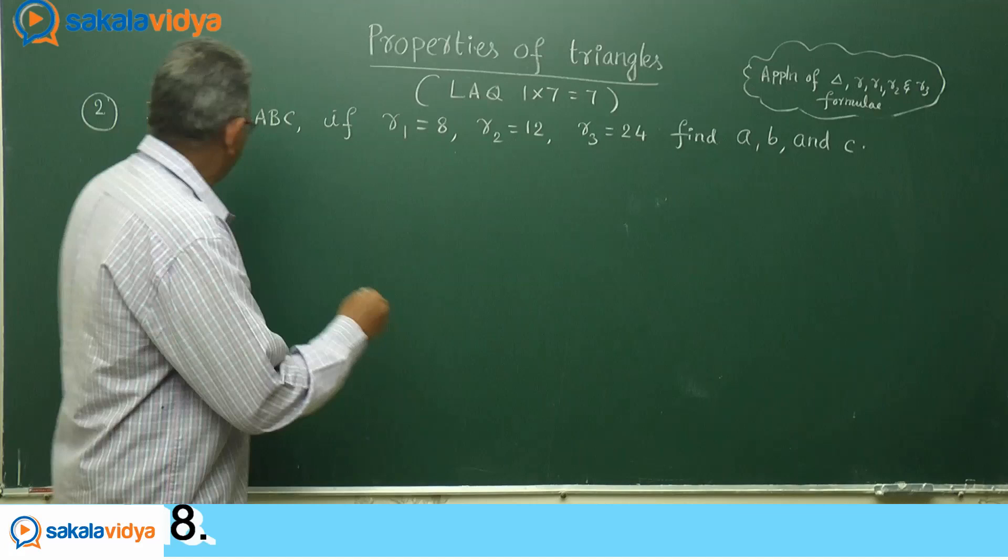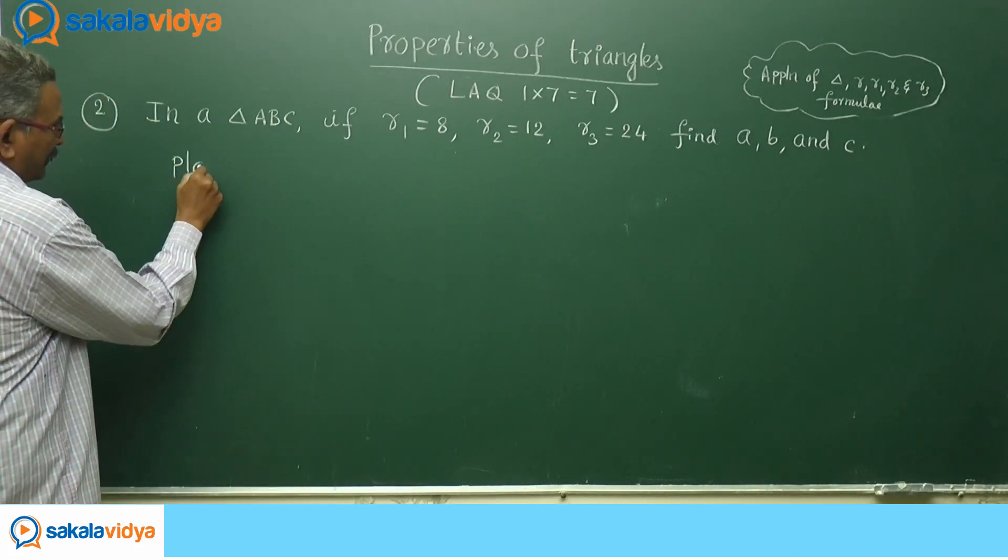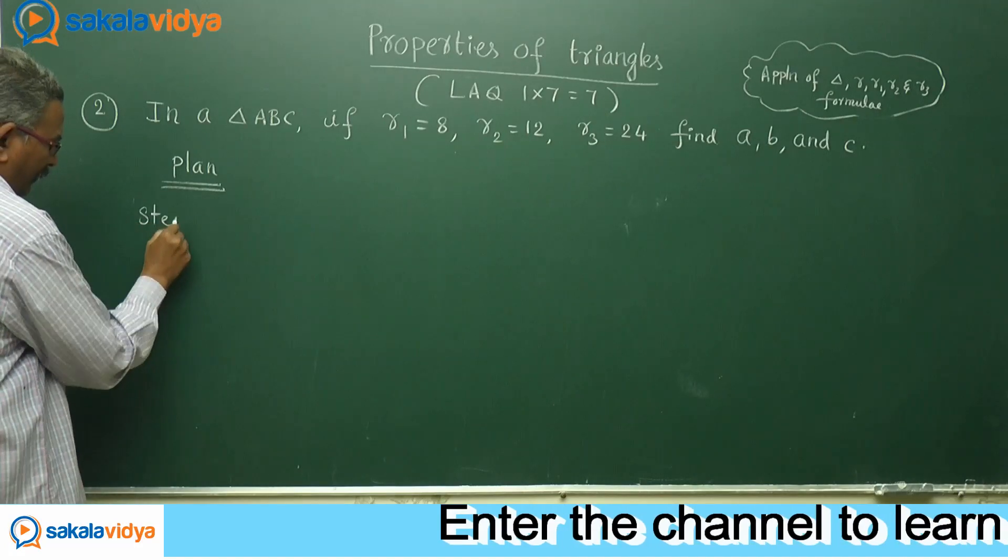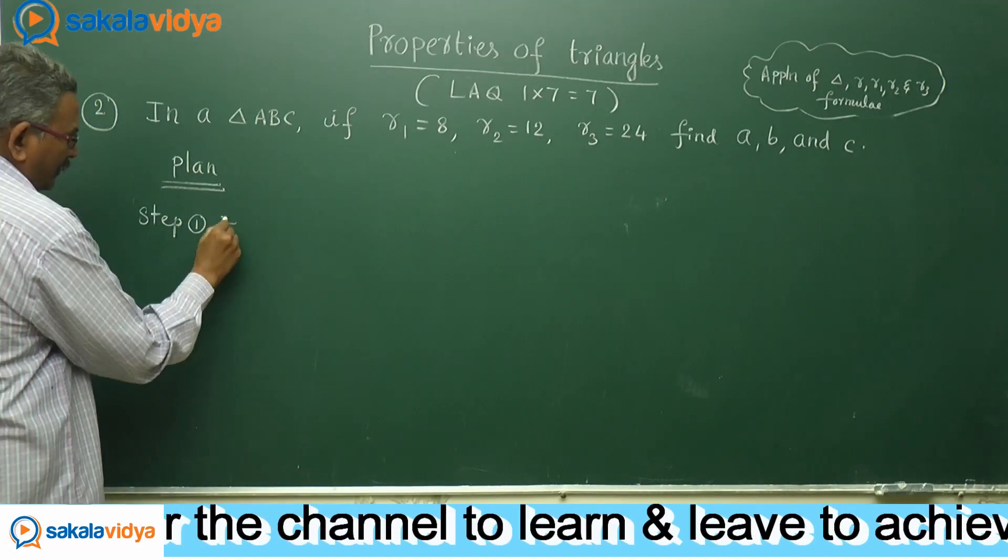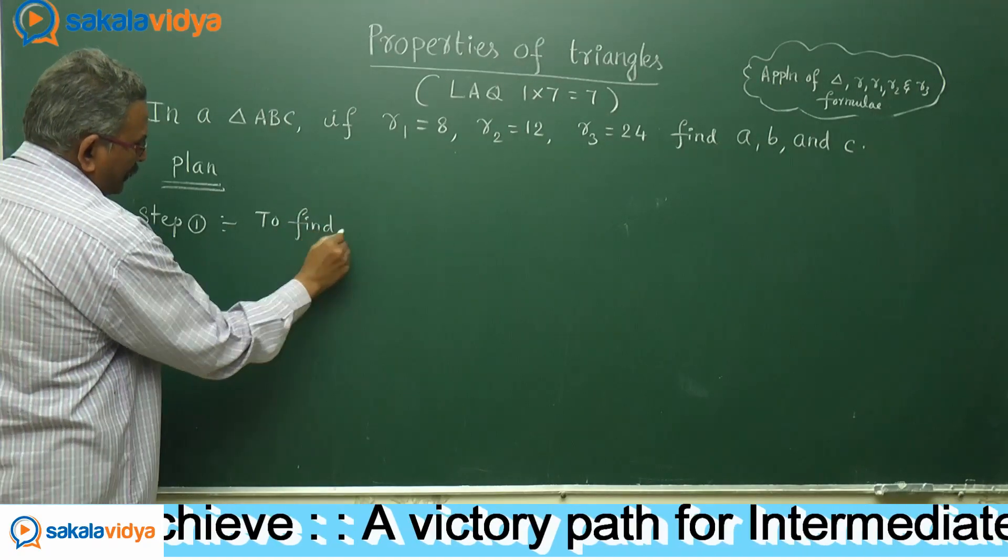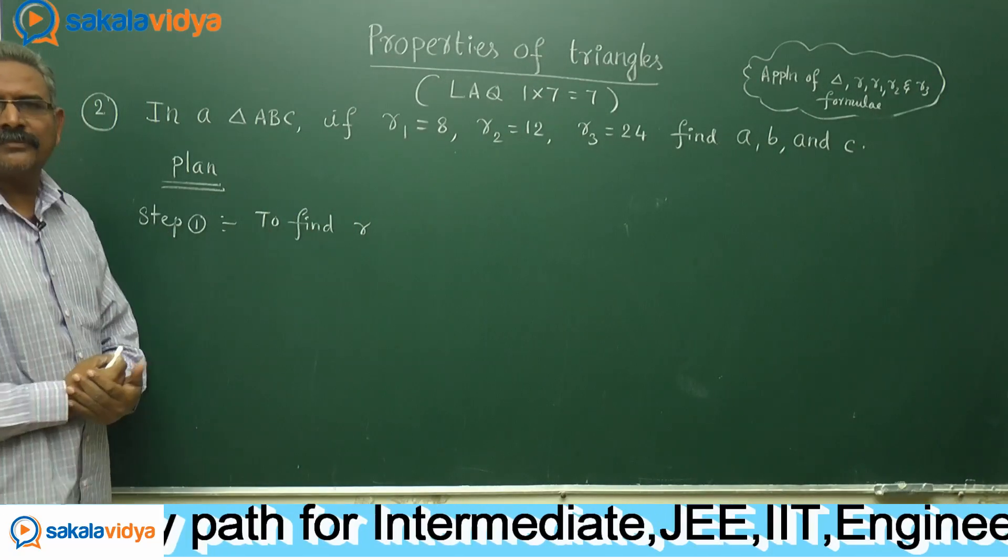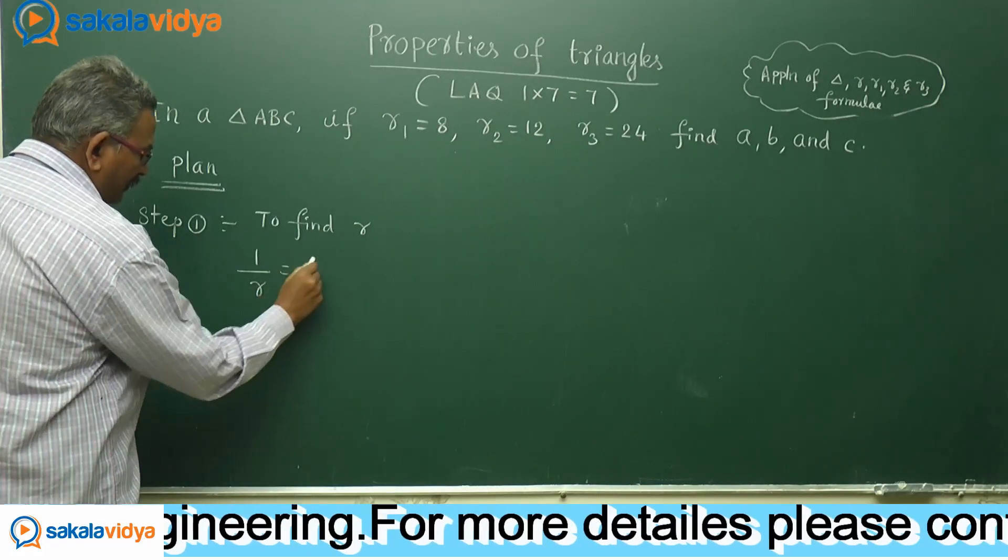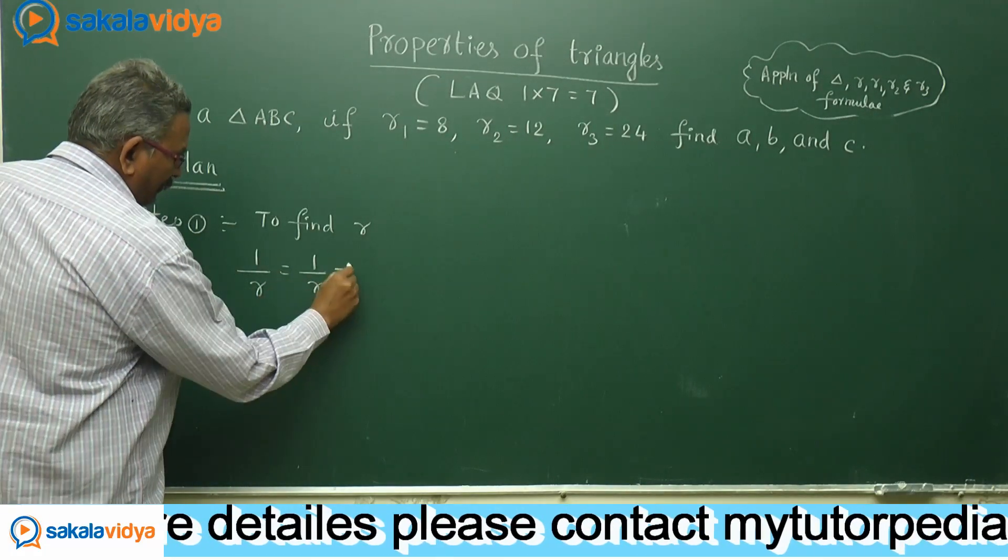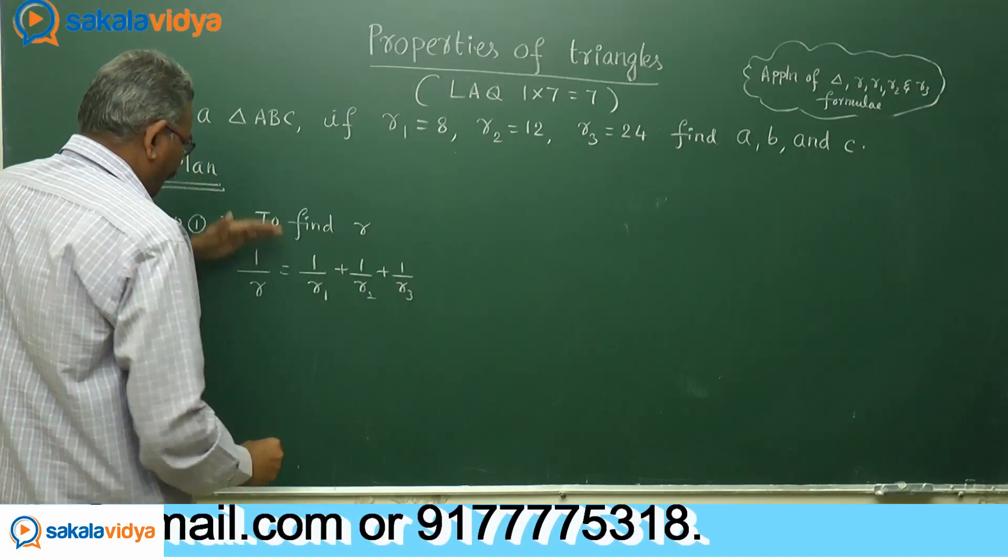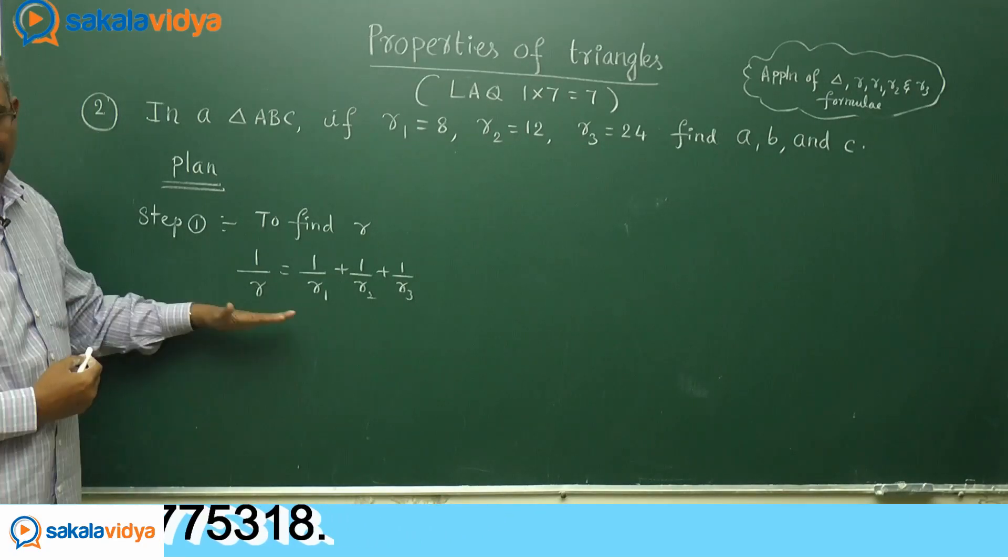That means it is a plan we shall make. Step 1: to find small r value using 1 by r equals 1 by R1 plus 1 by R2 plus 1 by R3. With the help of this, we can find out r value.